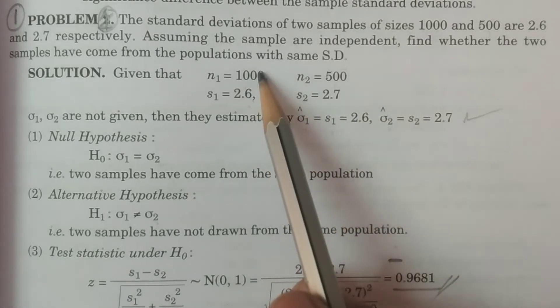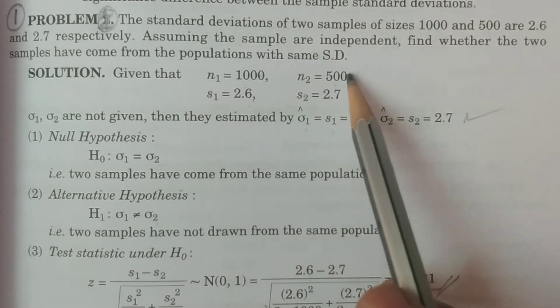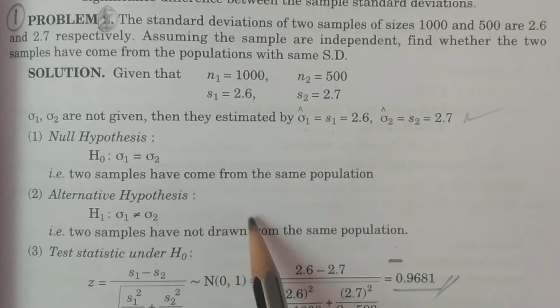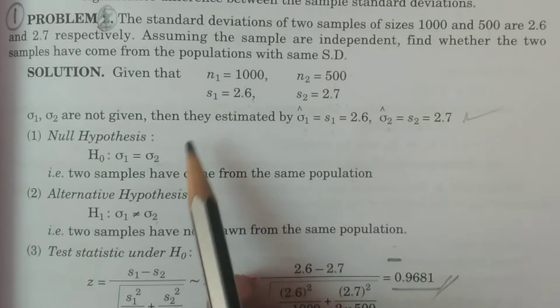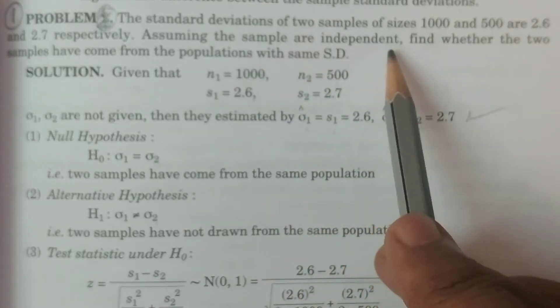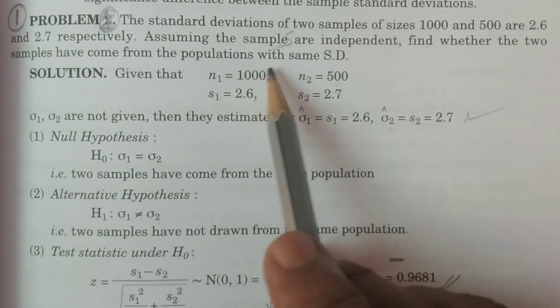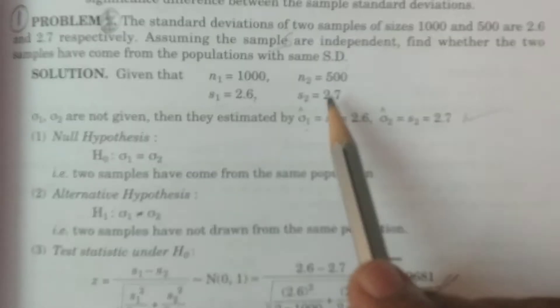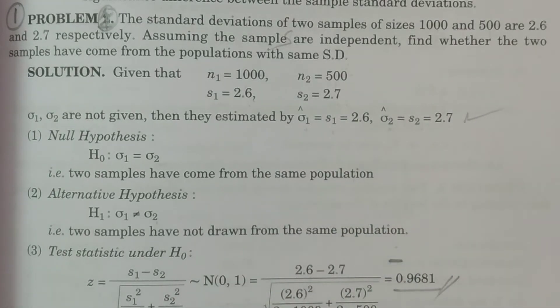S1 is from the 1000 group, S2 of 2.7 is the 500 group. Assuming the samples are independent. Find whether the two samples have come from the populations with the same standard deviation.